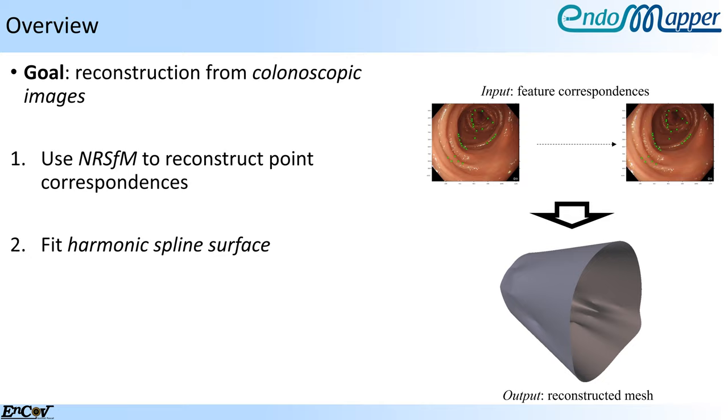Broadly speaking, there are two steps involved. The first step reconstructs the 3D position of the key points using our proposed method for NRSFM with isometric constraints. And the second step fits a harmonic spline surface to these reconstructed 3D points using the assumption that the observed surface, which is the inside of a colon, is homeomorphic to a right circular cylinder in some reference frame.